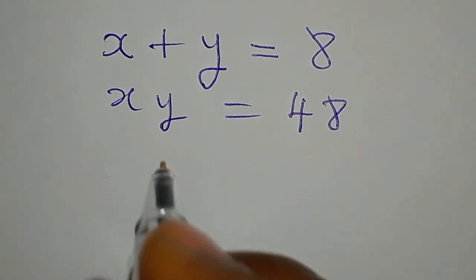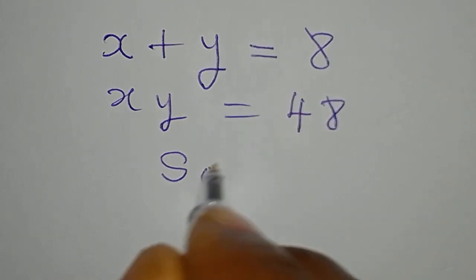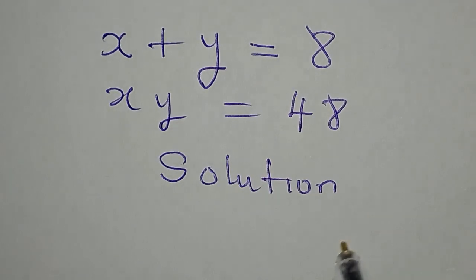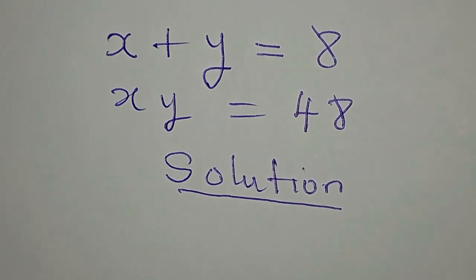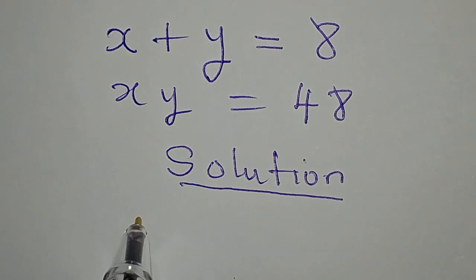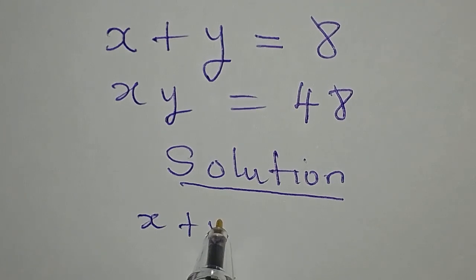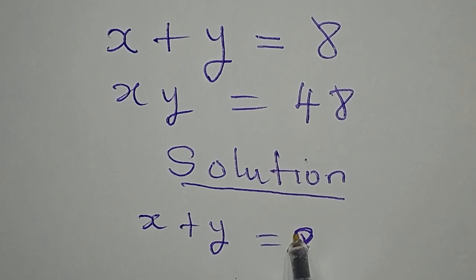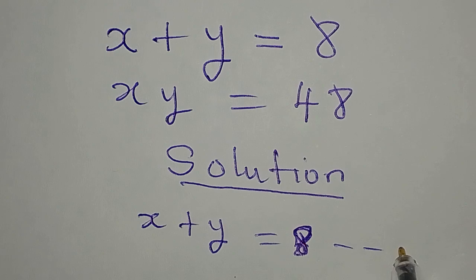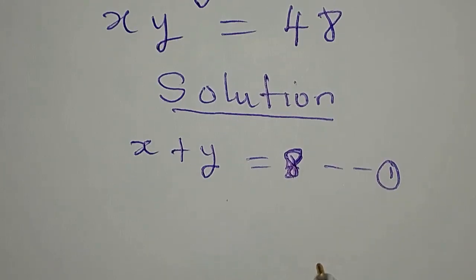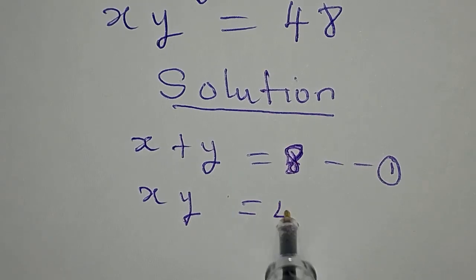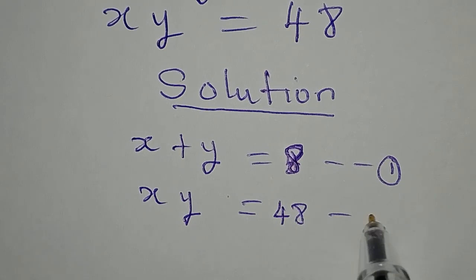Hello everyone, let's provide the solution to this problem. We have x plus y equals 8 — that is equation 1. Then we have x times y equals 48, and this is equation 2.